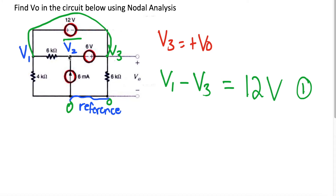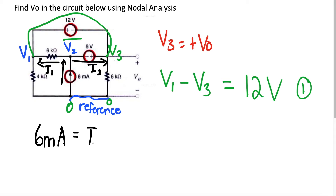Node 2 is a node that allows us to use V3 in the equation. We have 6 milliamps coming in, and that 6 milliamps splits two ways — a current going one way (I1) and a current going the other way (I2). So using KCL: 6 milliamps equals I1 plus I2. The current entering a node must equal the current leaving the node.